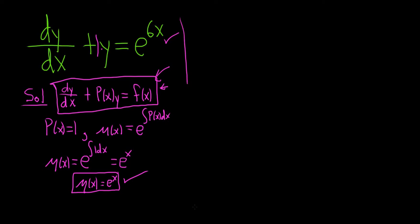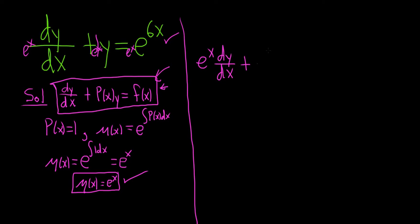Step three: multiply your differential equation by your integrating factor. So we put e to the x on each term: e to the x times dy/dx, plus e to the x times y, equals e to the x times e to the 6x. When you multiply those you add the exponents — x plus 6x — giving e to the 7x.